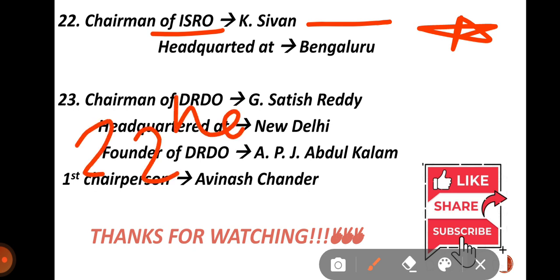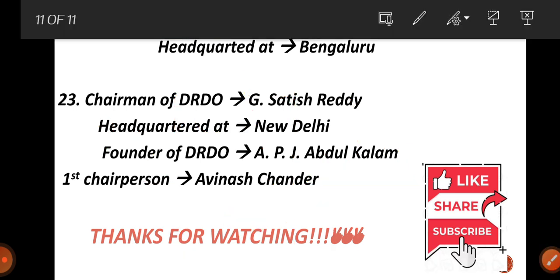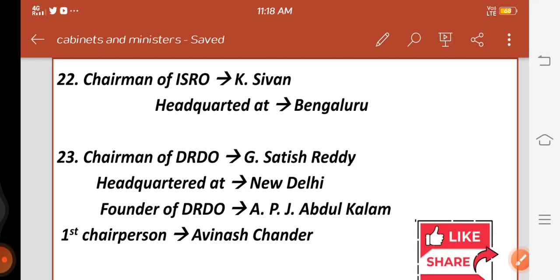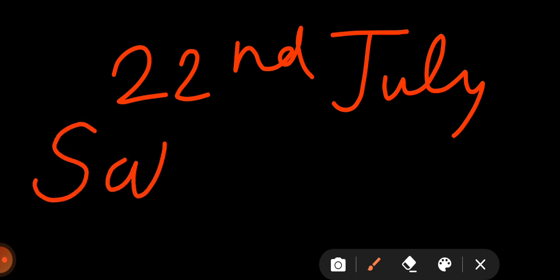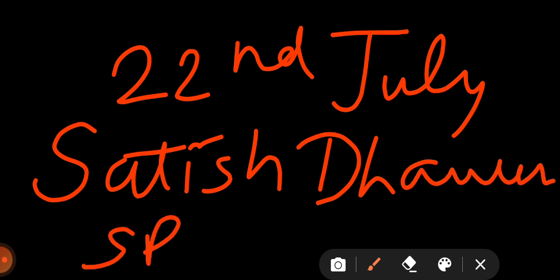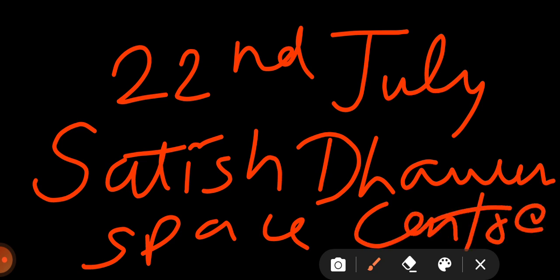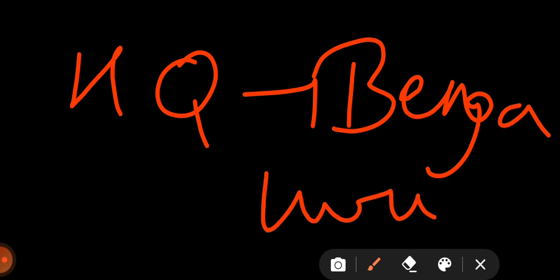Chandrayaan-2 was launched on 22nd July 2019 — this is important. Chandrayaan-2 was launched from Satish Dhawan Space Centre — this is also very important. The headquarters of ISRO is in Bangalore — this is important and frequently asked.